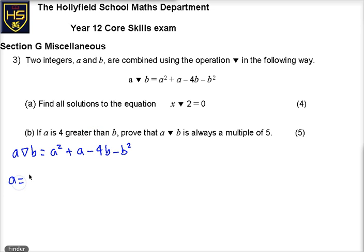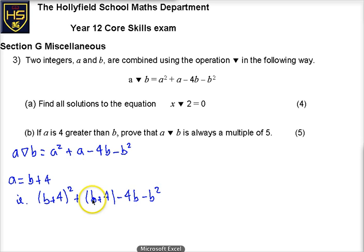So really A is equal to B plus 4. So what I can do is I can go through and change, every time there's an A I can change expression with B plus 4. So that tells me, i.e. B plus 4 squared plus, there's another A, so it's another B plus 4, then I've got to take away 4B, then I've got to take away B squared. So I've done my A triangle B, but I've also then changed it to change it with this expression here because this says A is equal to B plus 4. A is 4 greater than B.